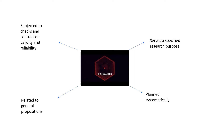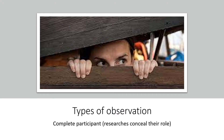Now let's understand the four types of observations or observer participations. The first type is where the observer is the complete participant — this means the researcher conceals their role during observation. Although this has some ethical implications, it is widely used. The advantage is that the researcher obtains first-hand experience with the informants, but the researcher may be considered intrusive since they are hiding their role.